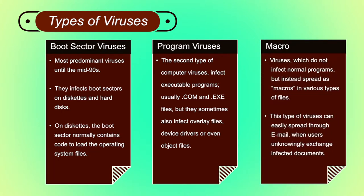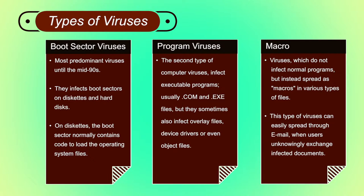The third type is the macro virus. These are viruses which do not infect normal programs but instead spread as macros in various types of files. A macro virus is written in the same macro language used for software programs like Microsoft Excel, Microsoft Outlook, or word processors like MS Word. When a macro virus infects a software application, it causes a sequence of actions — generally to harm — and begins automatically when the application is opened.